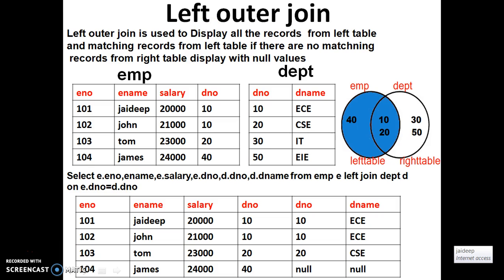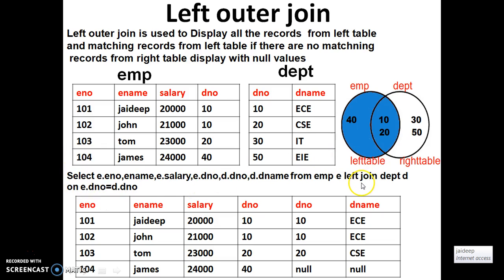What is left outer join? Left outer join is used to display all the records from the left table and matching records from the right table. If there are no matching records in the right table, then display with null values. The syntax for all joins is the same — in place of INNER JOIN, just write LEFT JOIN.